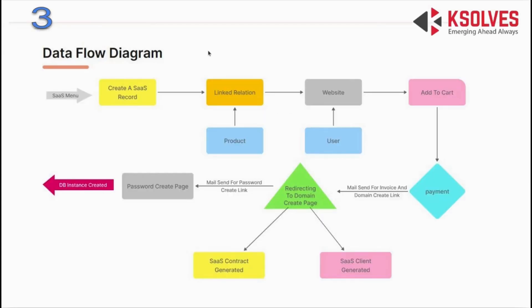Now let's talk about the data flow diagram. Starting with the SaaS menu, a SaaS plan is created in the backend. This SaaS plan is linked with an e-commerce product displayed on the website. The user comes to the website, adds the SaaS plan to their cart, and makes a payment for it — this is a subscription-based product. Once payment is made, the user receives an invoice email and is redirected to a domain creation page where they input their domain name.